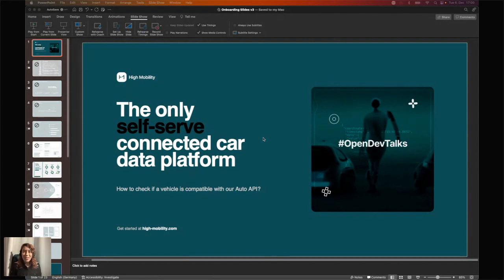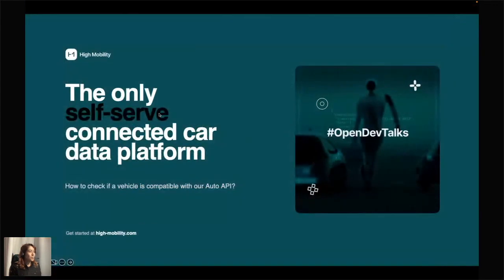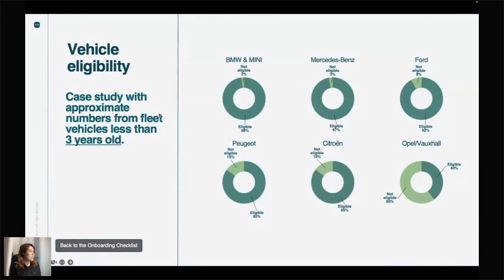Hello everyone, and welcome to our sixth Open Dev Talk on how to check if a vehicle is compatible with our Auto API. In today's edition, I will show you the importance of checking whether a car can be connected with our API. We have a small illustration to start with.